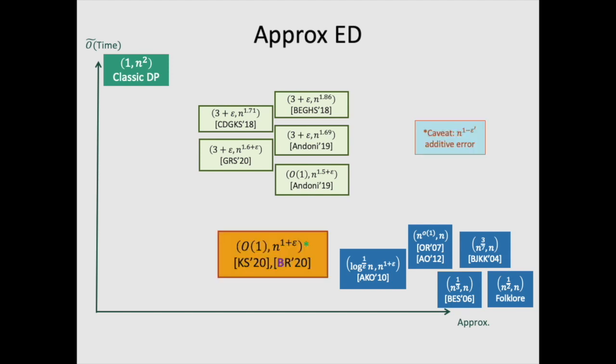What we present is a near-linear time algorithm for giving a constant approximation for edit distance, with the additional caveat that we introduced an additive error of n to the 1 minus epsilon prime.